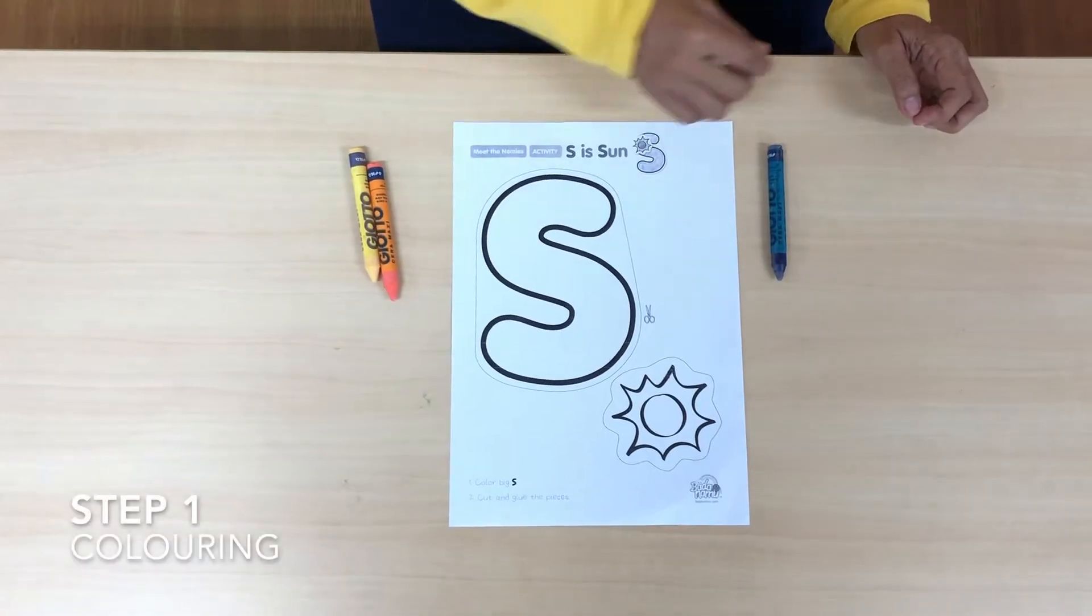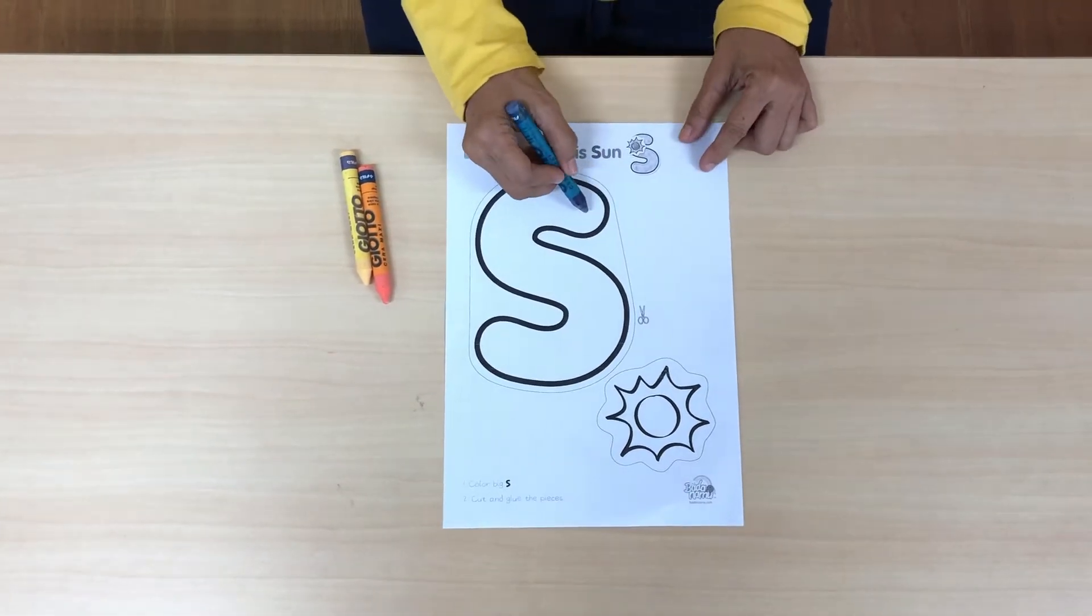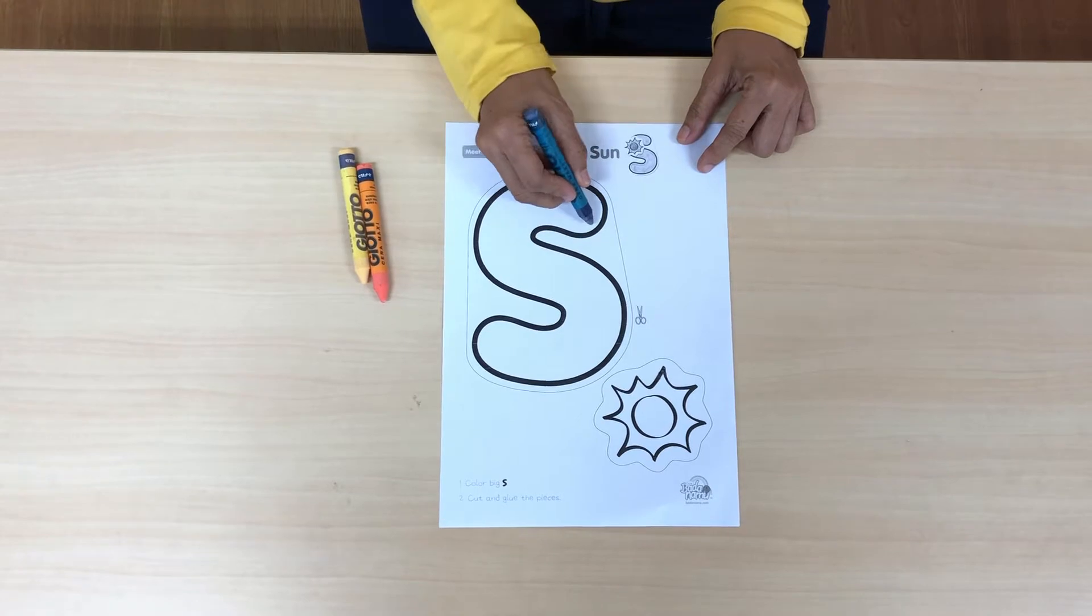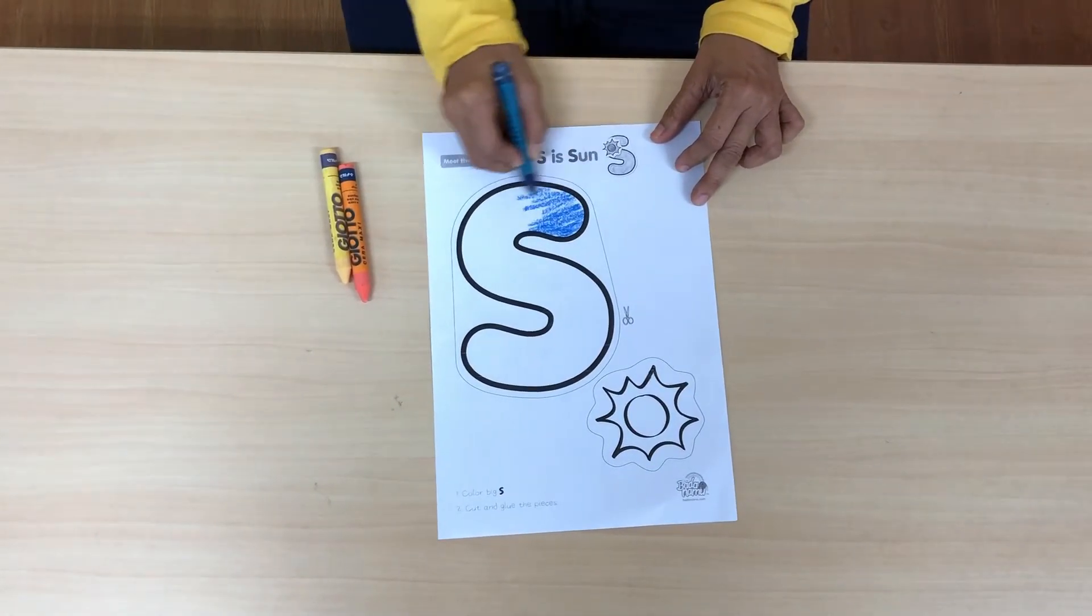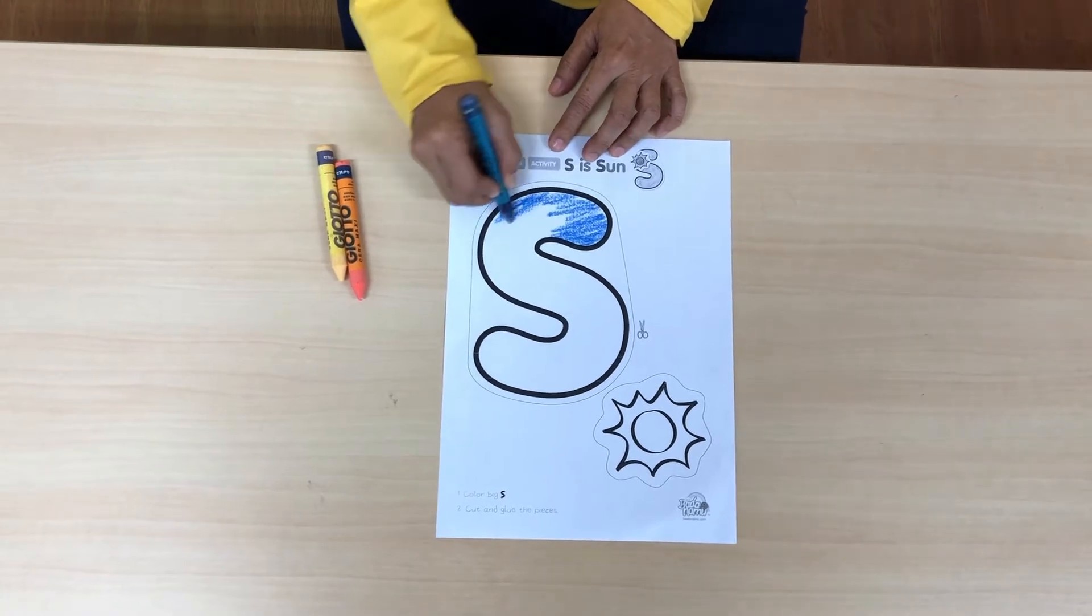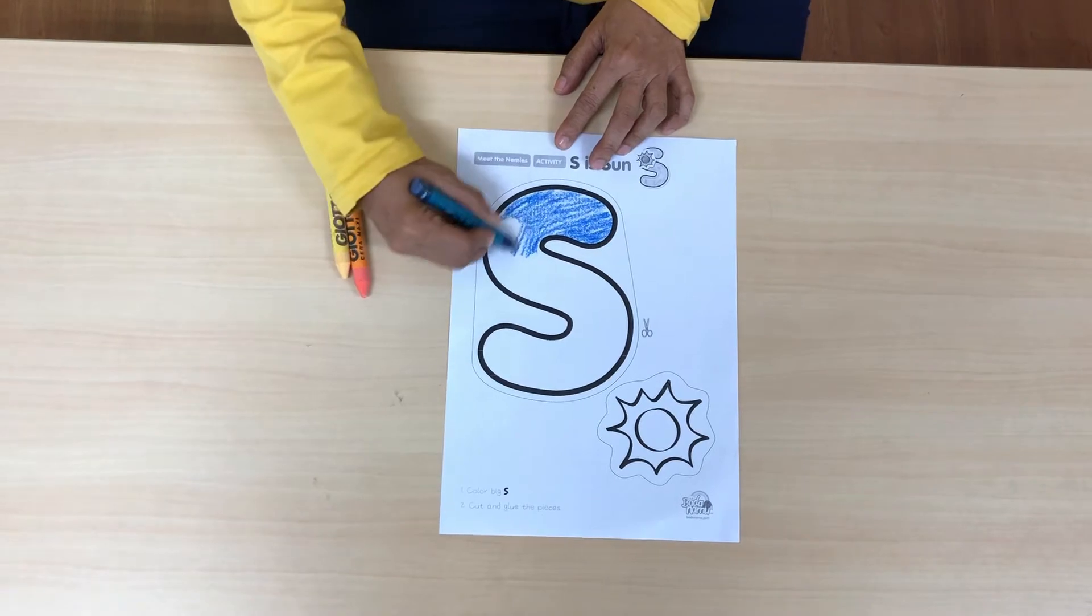Step one, coloring. First, color the letter in blue. I will start. Stay inside the line. Don't go out the line. So stay in line.